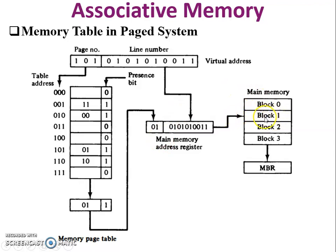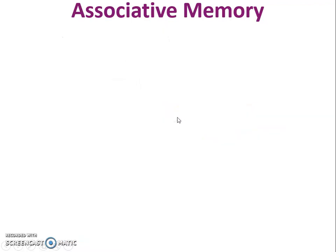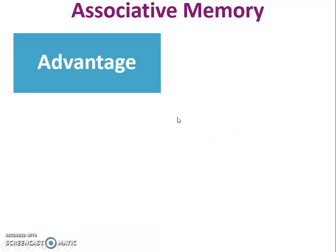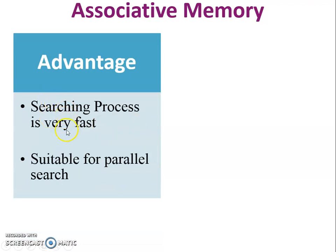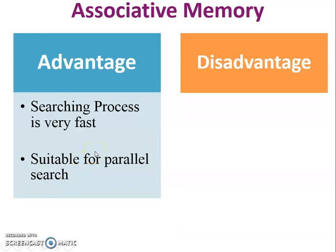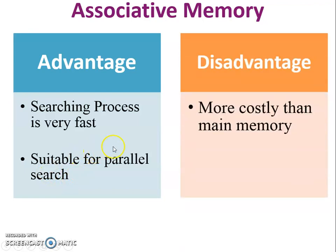Advantages: the searching process is very fast in associative memory, and it is suitable for parallel searching of data. Disadvantage: the cost of associative memory is very high compared to main memory.